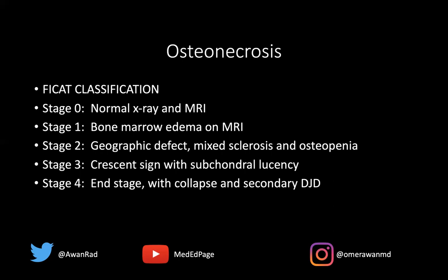Stage zero is obviously normal — both X-ray and MRI look completely normal. In stage one, the X-ray will be normal but you start to see bone marrow edema in the bone. The hip is the most common place to get osteonecrosis, and the shoulder is the second most common. Stage two, which is what I showed in this index case, features a geographic defect of mixed sclerosis and lucency without articular collapse. Stage three is when we start to get articular collapse with a crescent sign — a subchondral lucency equivalent to a subchondral fracture just under the bone near the articulating joint surface.